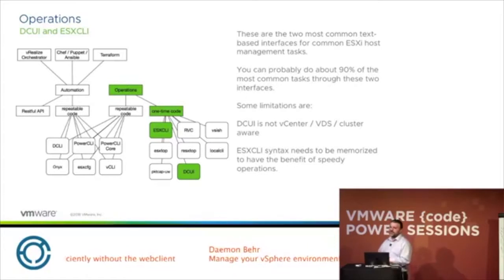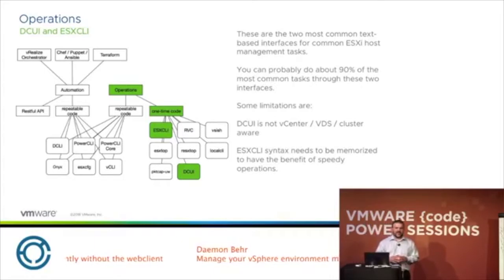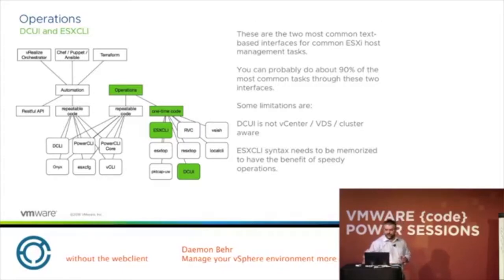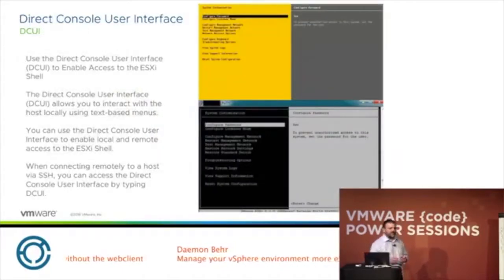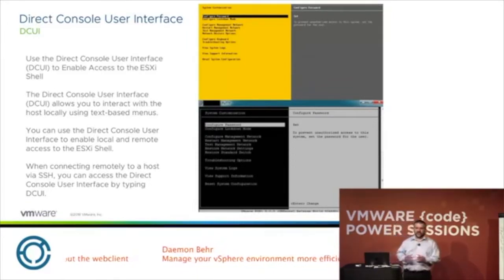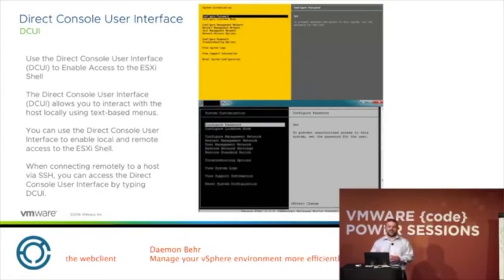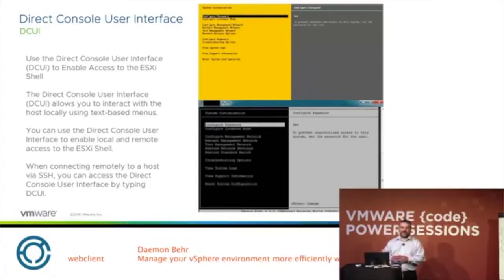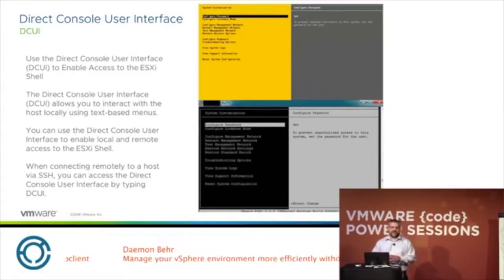The two most common CLIs used in the vSphere environment are the ESXCLI and the DCUI — the Direct Console User Interface. The DCUI is what you get when you plug a keyboard and monitor into your ESXi server, but that's not the only way to access it. You can SSH into the server and type 'dcui' to get the same interface in a text console through an SSH session, which is really handy.